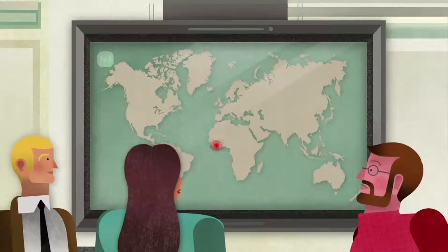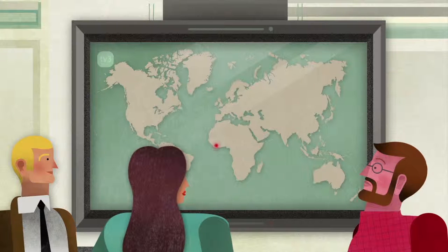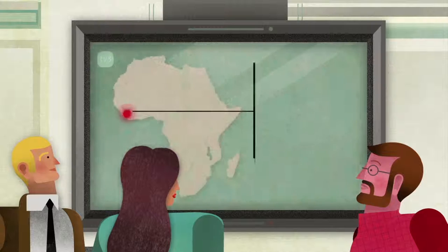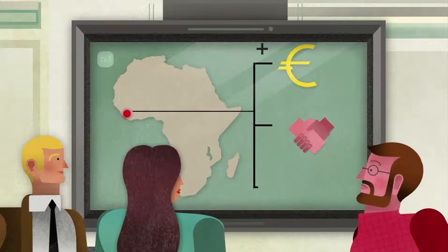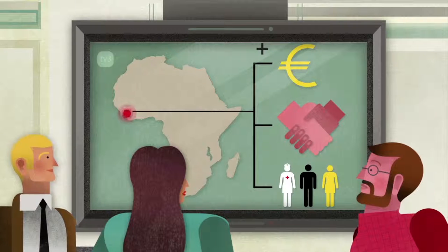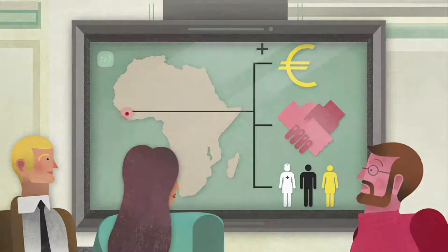The risk of an Ebola outbreak in Europe is very low. But don't forget, the best way to protect Europe and the rest of the world is to control the Ebola outbreak in West Africa. With human and financial support, we can get the number of Ebola cases down to zero.